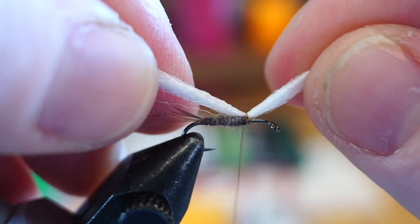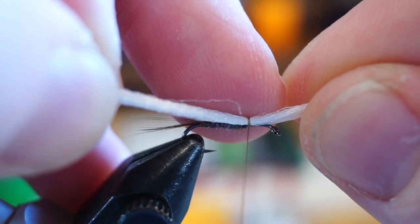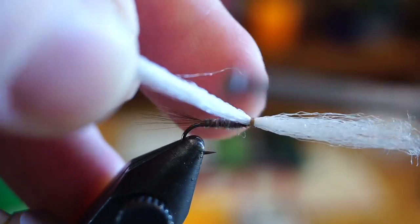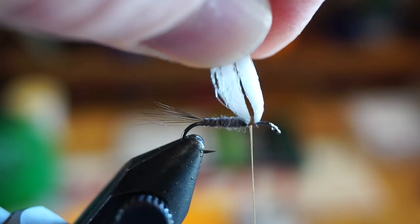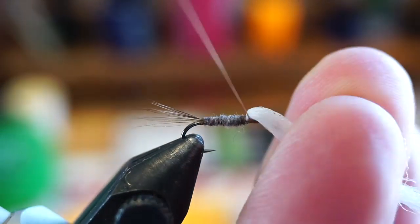Then wrap around the thread and place on top of the hook shank. Place your finger on the side of the hook shank to make sure it doesn't spin around the hook. Then make a couple of tight wraps to hold it in place. Then pull the post back and make some wraps in front, and also make some wraps behind it as well.